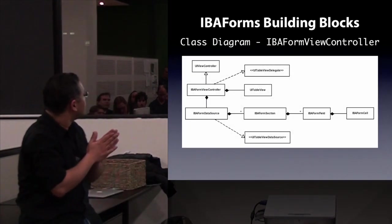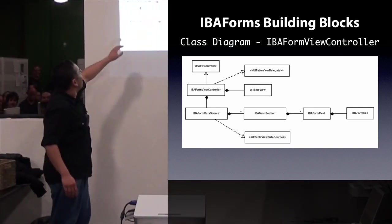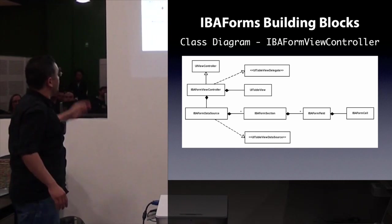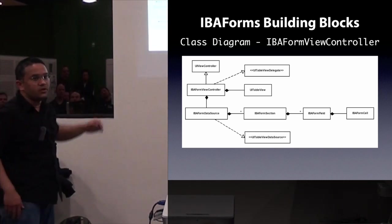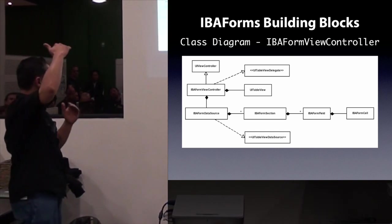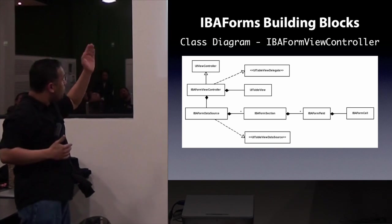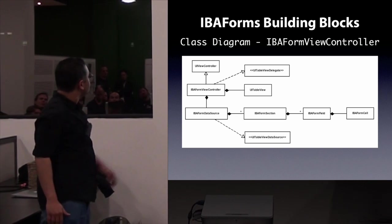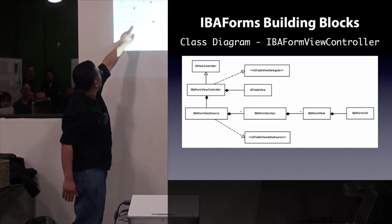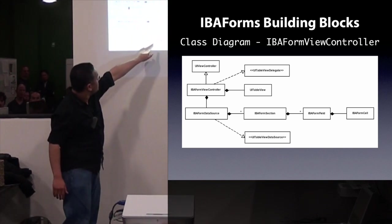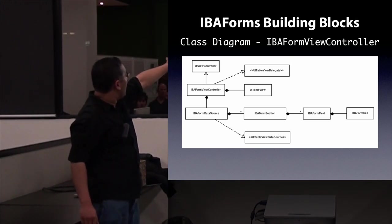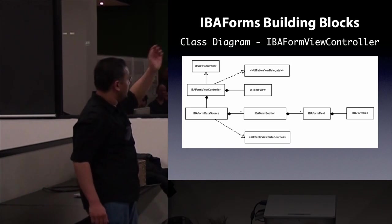Let's get into the technical details of how IBA Forms is put together. You've got your IBA Form view controller, which has a data source. That data source is made up of sections — the table view sections that you see. Within each section you've got one or many IBA Form fields, which are made up of a form cell. IBA Form data source actually implements the UITableViewDataSource protocol, and IBA Form view controller inherits from UIViewController and implements the delegate protocol.